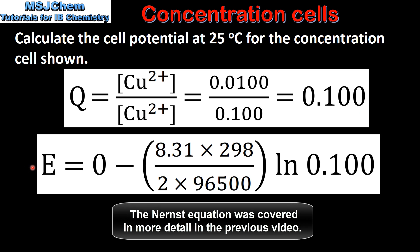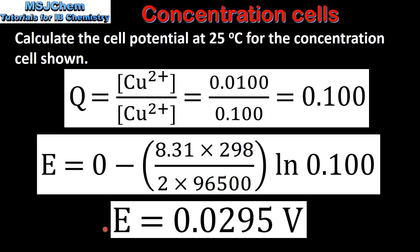Next we'll use the Nernst equation to calculate the cell potential. For a concentration cell, the value for the standard electrode potential is zero. So when we do the calculation, we get a value for the cell potential of 0.0295 volts.